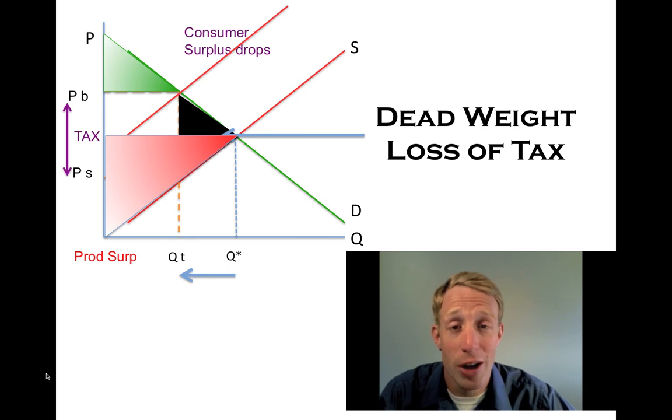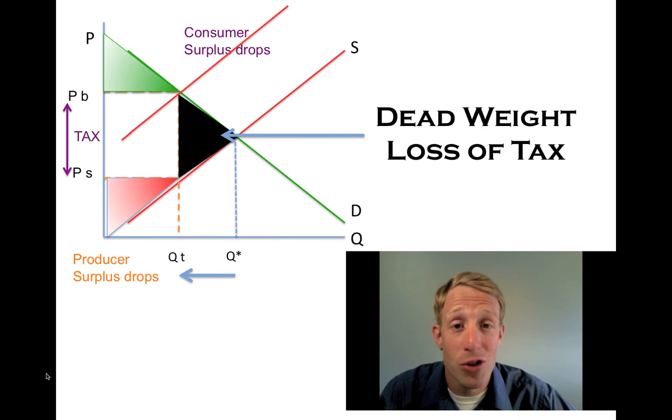The producer surplus triangle shrinks as well. It goes from the area below the price and above the supply curve to the now lower price. And so that area shrinks as well. Some of that surplus goes to government, which is the rectangle here. And the fact that government gets some revenue, gets some of that surplus, isn't worrisome. What is worrisome is that there is some of the surplus that used to be there that no longer exists.